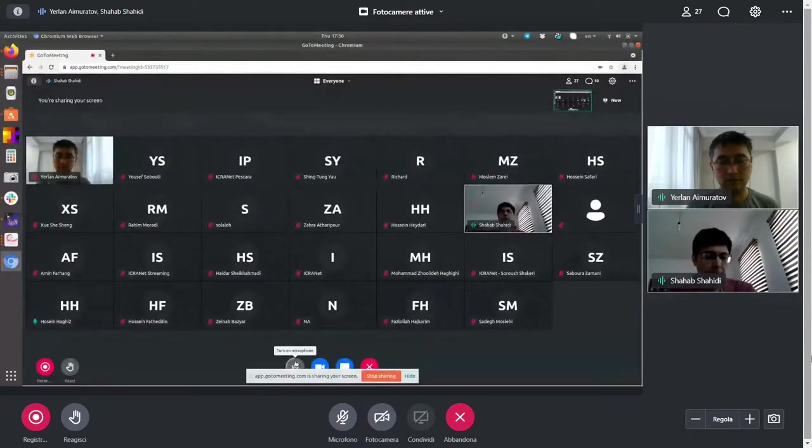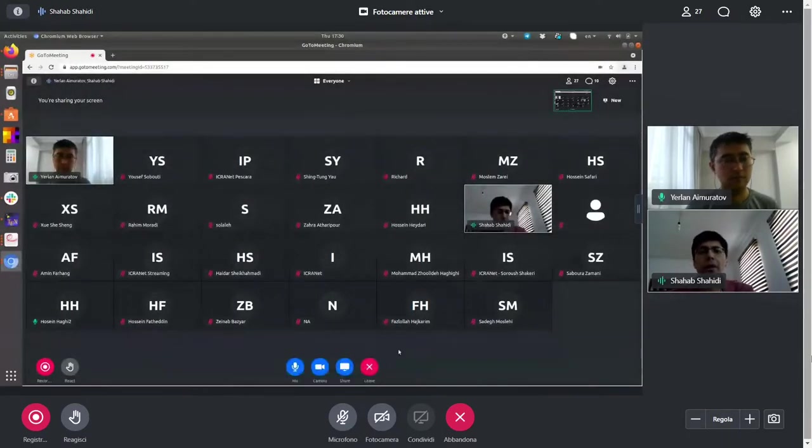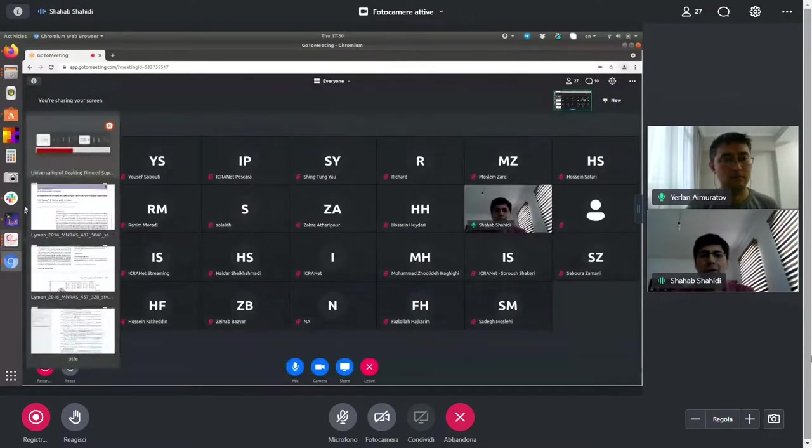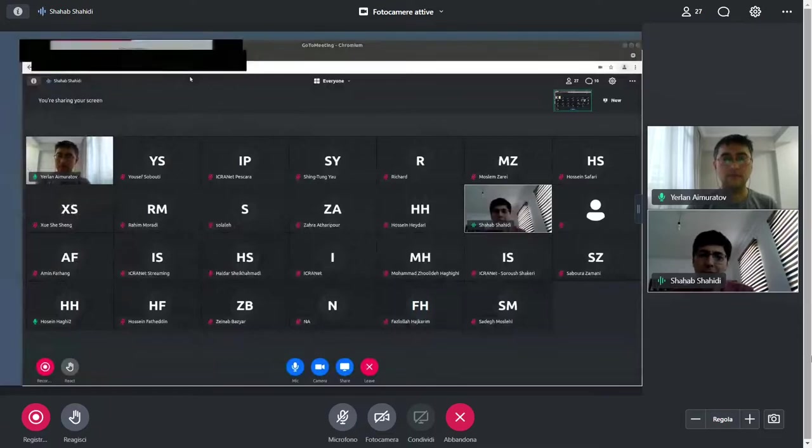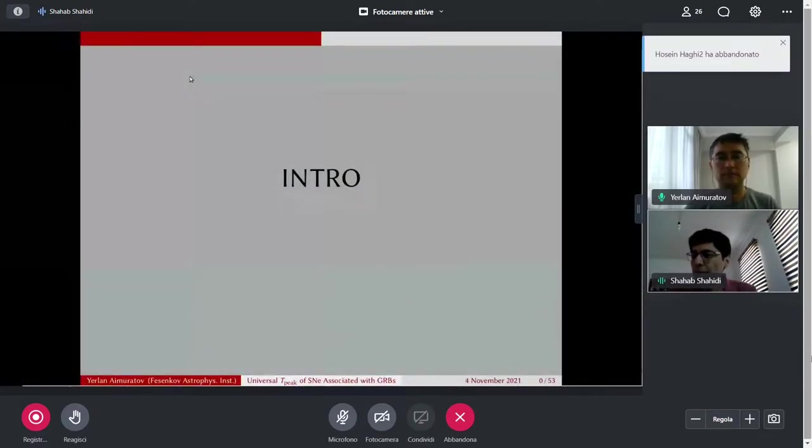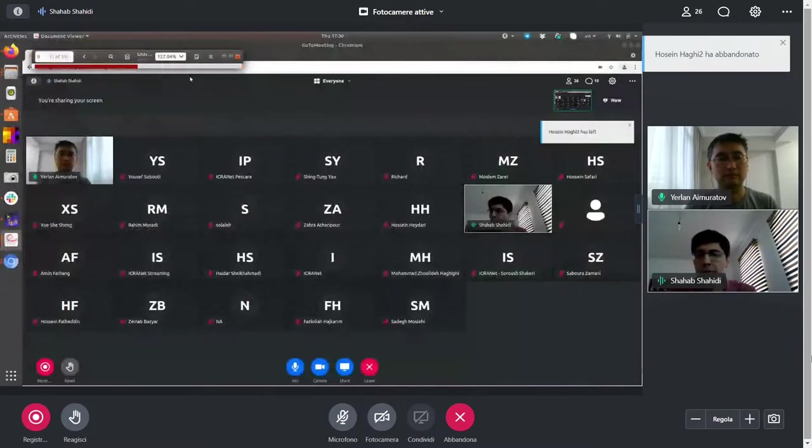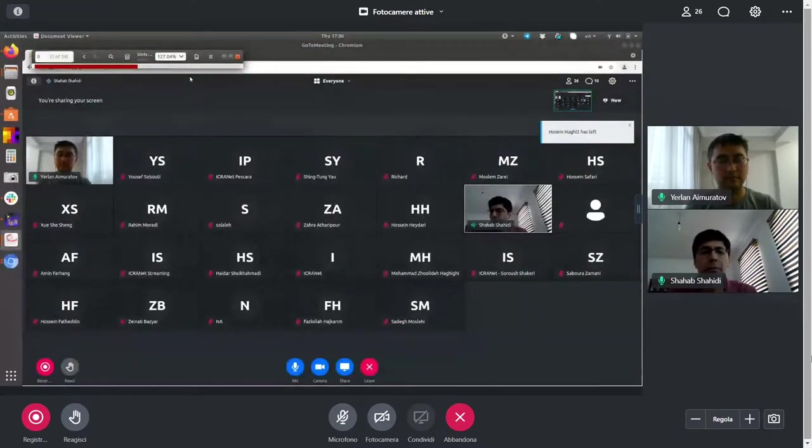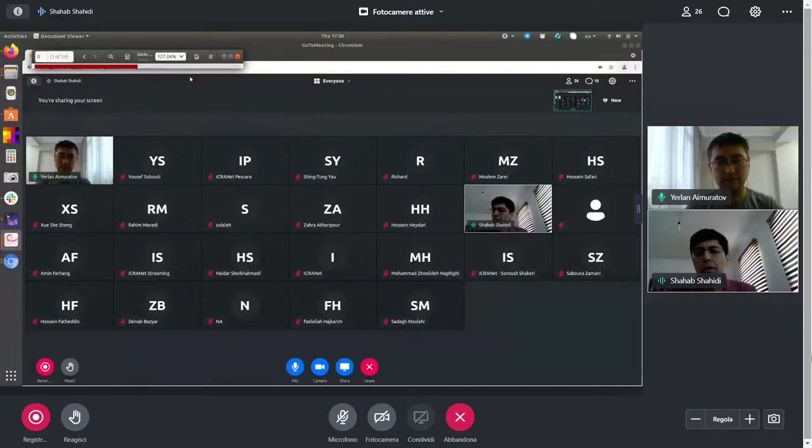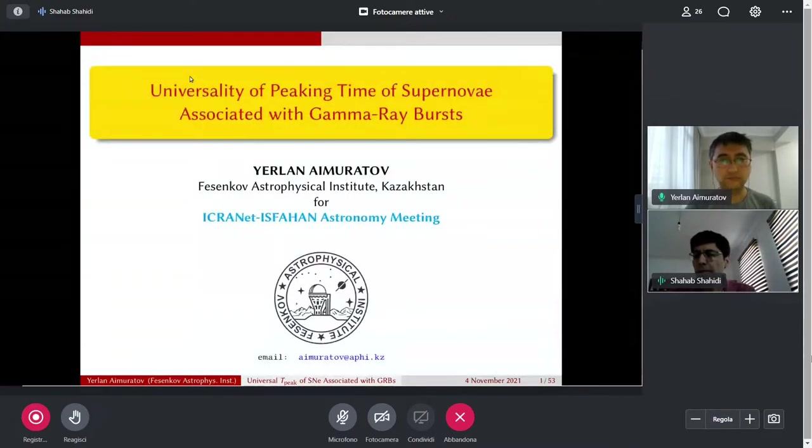Okay, let's begin the afternoon session. I hope that you have enjoyed the meeting so far. Our first speaker is Professor Yerlan Aymuratov from Fesenkov Institute, Kazakhstan, and he will talk about universality of peaking time of supernovae in association with GRBs. You have 25 minutes to go and hopefully we will have five minutes for questions and answers. Go ahead.